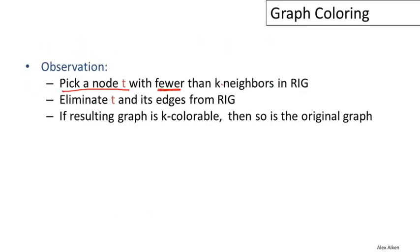Then we'll eliminate T and its edges from the register interference graph. We'll just delete that node and all the edges adjacent to it. If the resulting subgraph is K-colorable, then so is the original graph. The idea is to do a divide-and-conquer approach.